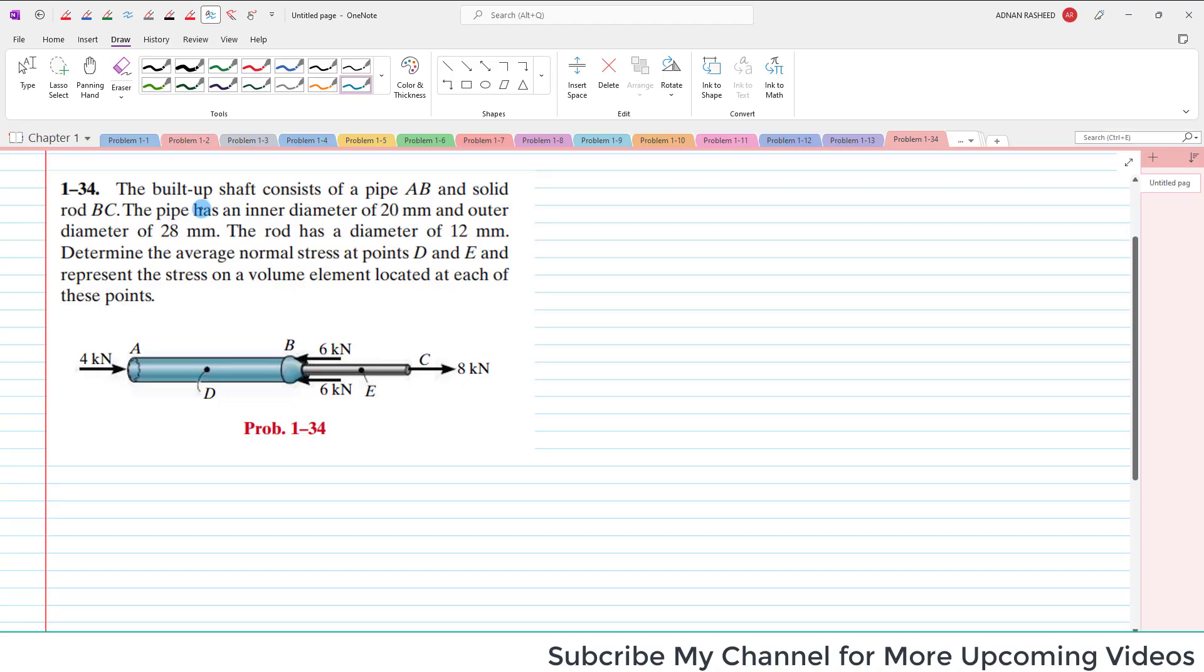You can see this is a built-up shaft that consists of pipe AB and a solid rod BC.